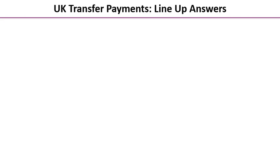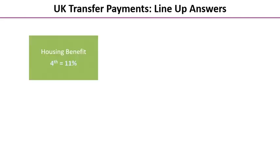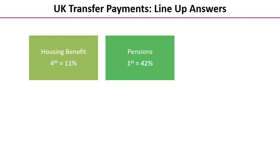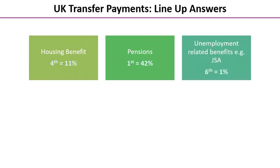Here are the answers. Housing benefit was fourth — about 11% of all welfare spending goes on housing benefit. Pensions take first place at 42%, nearly half, typically over £100 billion each year. In last place was unemployment-related benefits — for example, Job Seekers' Allowance — just 1% of welfare spending goes on unemployment benefits, which is probably a surprise to many of you.